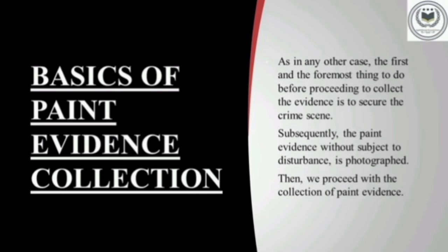These are some basics of paint evidence collection which must be kept in mind while collecting paint samples from the crime scene. The first and foremost thing that needs to be done is to secure the crime scene. Then the crime scene will be photographed with each and every thing placed exactly where it was found. The crime scene needs to remain untouched until each corner of the scene is recorded via photos and videos. Then, after all this is done, we will proceed to collect the paint samples.